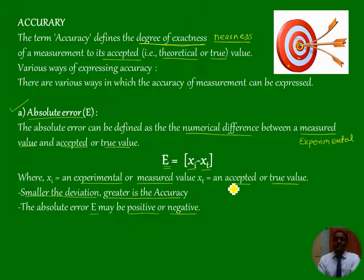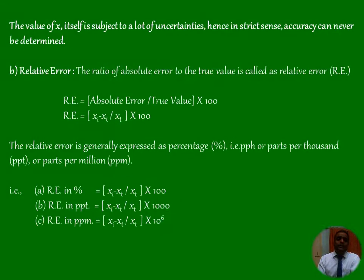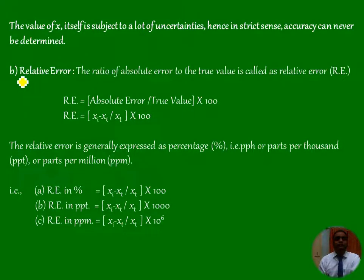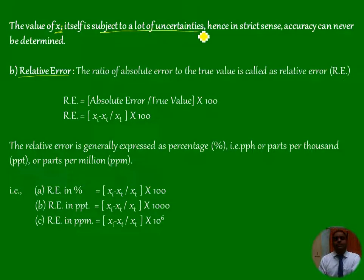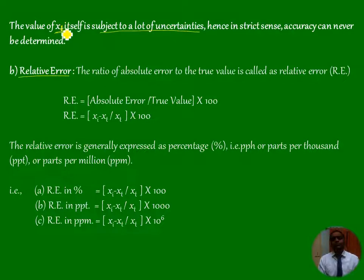Absolute error is one way to express accuracy. Another way is relative error. The value of Xt — that is the true value — is itself subject to a lot of uncertainty. That means your accuracy or your error depends upon the true value, and if there is uncertainty in the true value itself, it becomes very difficult to find out the accuracy.